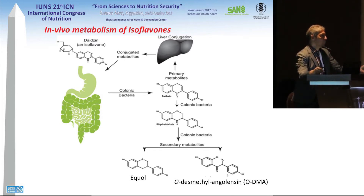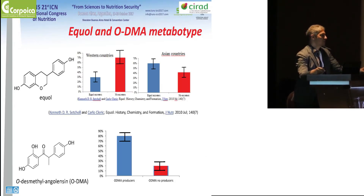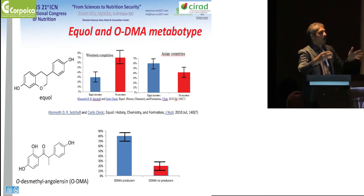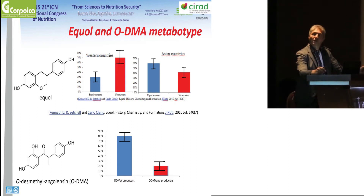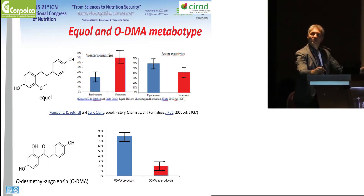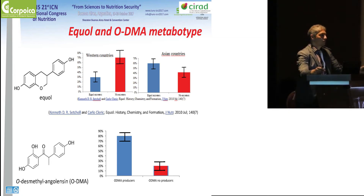So we arrive at a new concept: the metabotype. If you belong to the category of equol producers, your gut microbiota metabotype can be labeled as equol producer. As we have seen, it varies a lot according to geographical region. In Western countries, on average only 30% of people are equol producers, while in Asian countries it is much higher, probably due to diet — but we don't really know if it is diet or genetics.